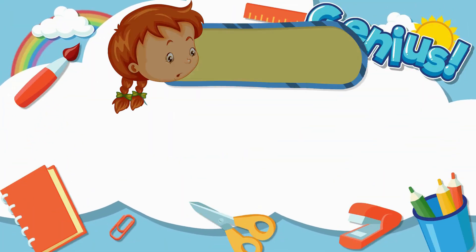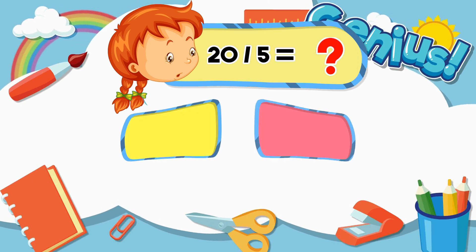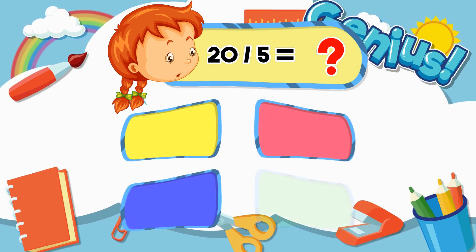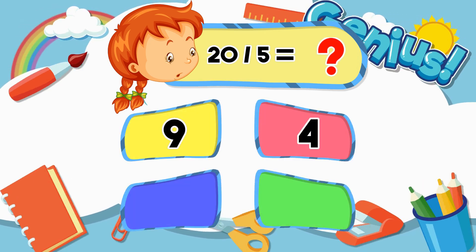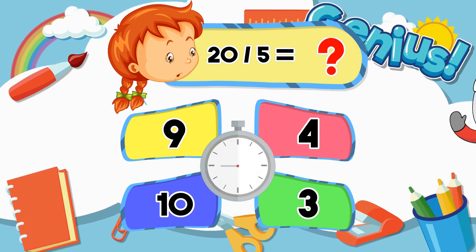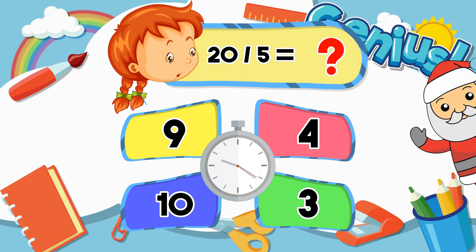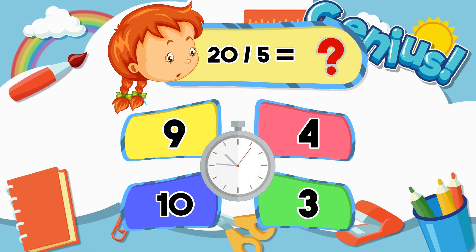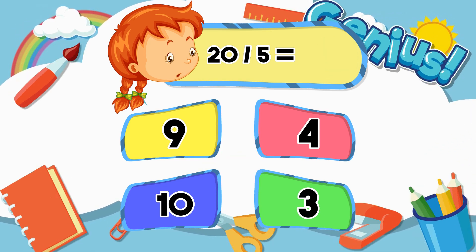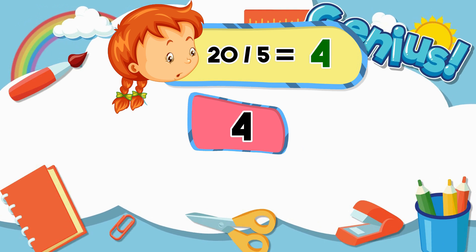What is twenty divided by five? Nine, four, ten, three. Four.